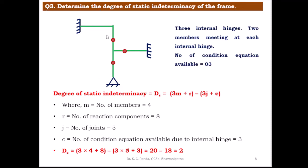Coming to the third example. This frame has two fixed supports, one hinge support, and 3 internal hinges located in 3 separate members. At each internal hinge, only 2 members meet, so each contributes 2 − 1 = 1 condition equation. The total number of condition equations available is c = 3.